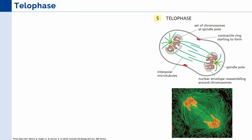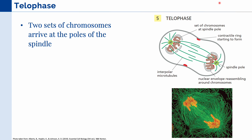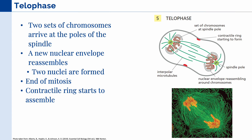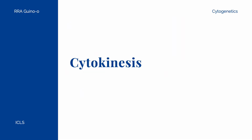Finally, in telophase, the two sets of chromosomes have completely arrived at the opposite poles of the cell. It is in this stage that the new nuclear envelope starts to reassemble around those chromosomes. So now we have a cell in which there are two nuclei formed, and this marks the end of mitosis. Of note, the contractile ring also starts to assemble in this stage, and the cell starts to divide and enter into cytokinesis.